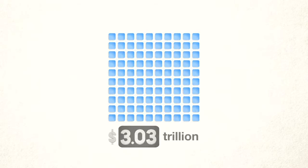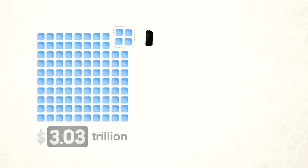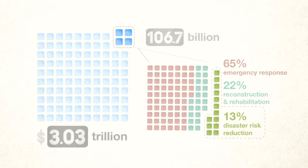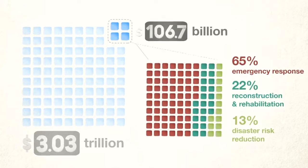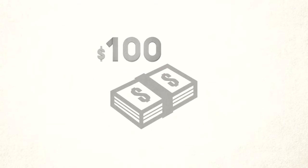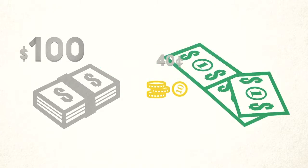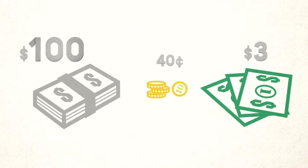Between 1991 and 2010, the international community committed over 3 trillion dollars in aid. Of that amount, 106.7 billion dollars were allocated to disasters. And of that amount, just a fraction of about 13% was put to use for risk reduction measures before disasters strike. This means that out of 100 US dollars spent on development aid, only 40 cents have been invested into risk reduction, compared to 3 US dollars for delivering aid after a disaster.